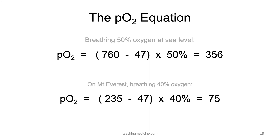If you were to find yourself on Mount Everest, the atmospheric pressure would only be 235. And so if you were on Mount Everest breathing 40% oxygen, this is the equation for determining how much partial pressure of oxygen you were inhaling into your lungs.